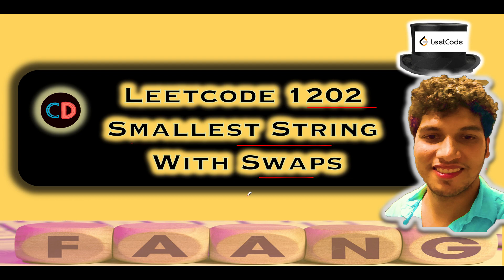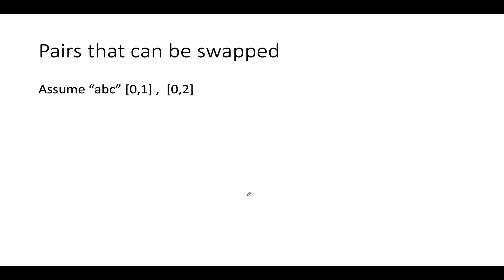Before jumping into the core algorithm, let's extract the maximum out of the question. I've taken a slightly different example. Let's assume the input string is 'abc' and the pairs array is [0,1] and [0,2]. So you can swap the 0th position with the 1st position any number of times, or swap the 0th position with the 2nd position any number of times.